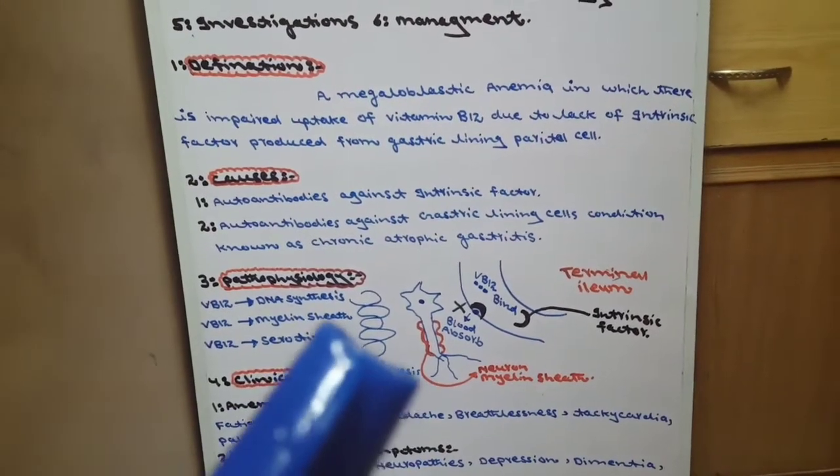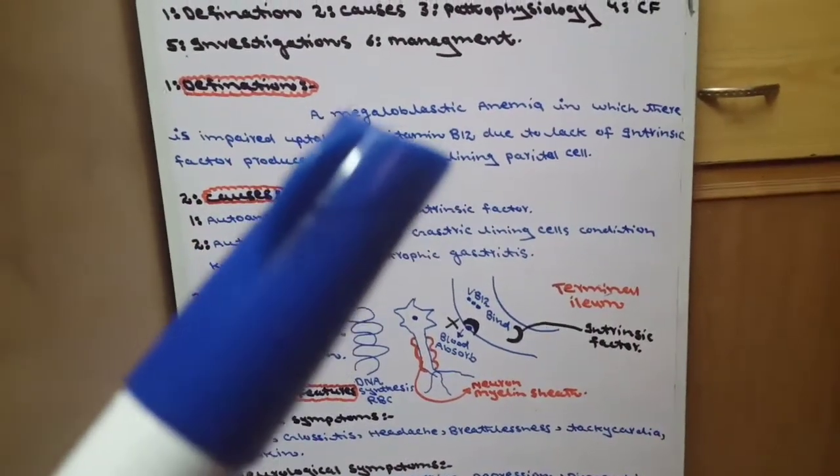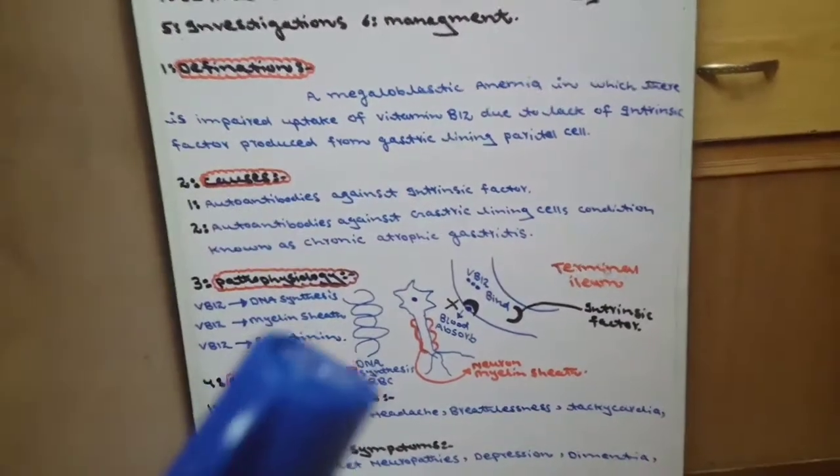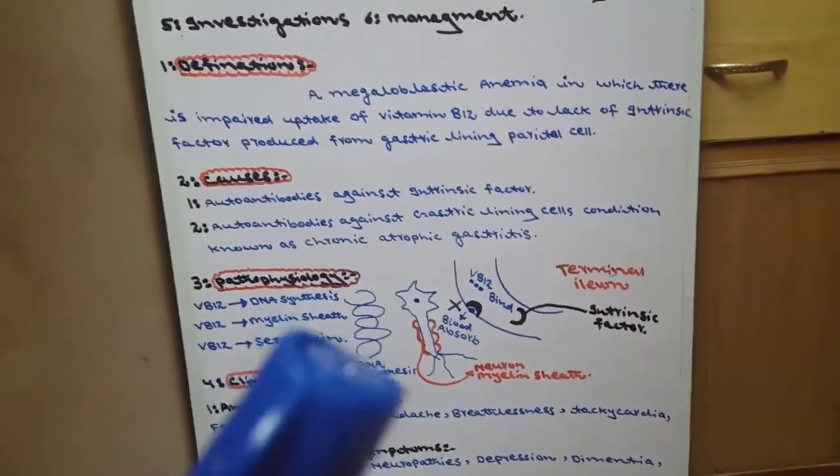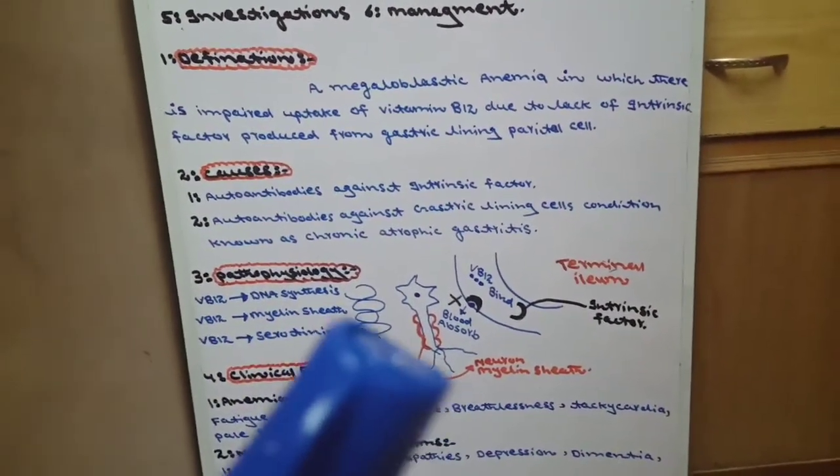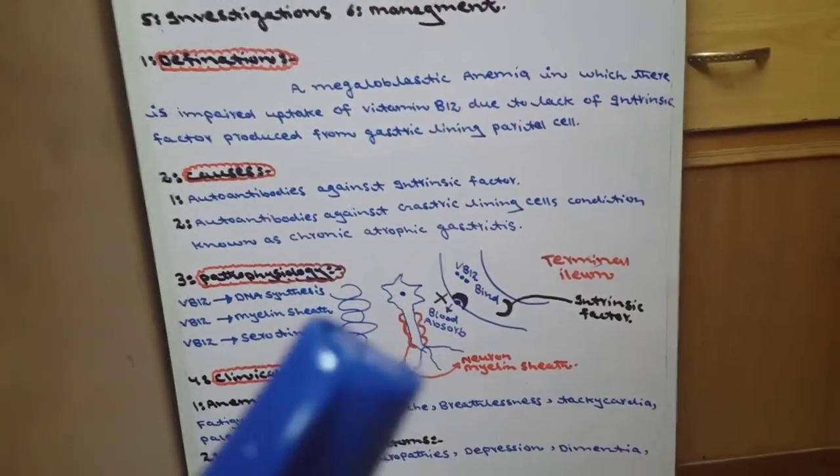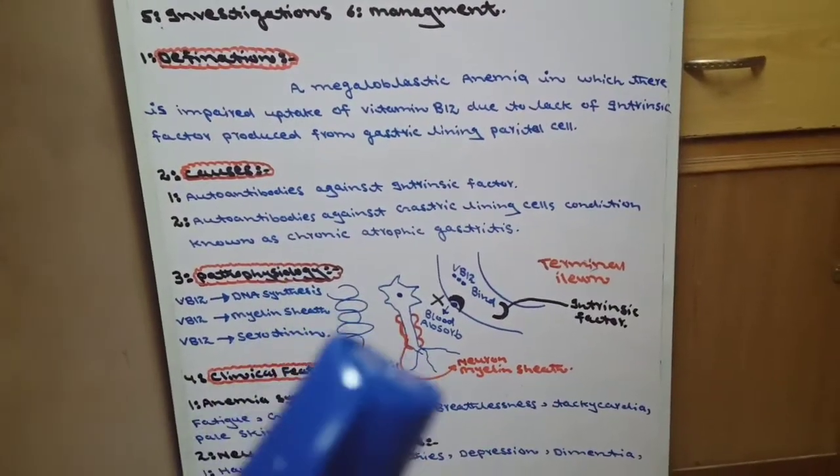When it goes out of control, the result will be megaloblasts, as we have read. When we have megaloblasts, the megaloblasts will die from the beginning, and anemia will happen.